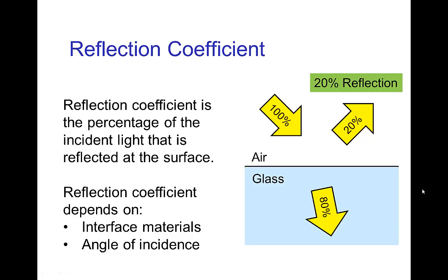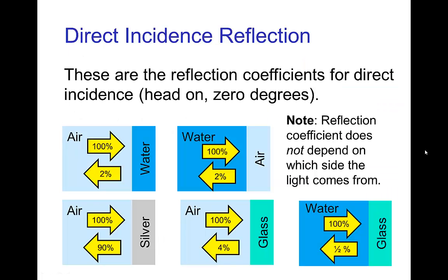The reflection that you get from a material which is at least partially transmitting the light is determined by the reflection coefficient. The reflection coefficient is simply the percentage of the incident light that is reflected at the surface. That reflection coefficient depends on the materials of the interface — what's on each side, for example air and glass — and it also depends on the angle that the light comes in at. Let's start with just the effect of the materials.